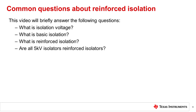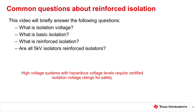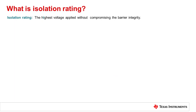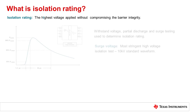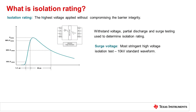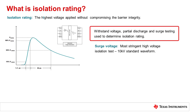Systems with voltages greater than 50 volts DC or 25 volts AC are considered to have hazardous voltages. For these systems, industry standards require isolation voltage certification for safety. Isolation voltage is the highest amount of voltage that can be applied across an isolation barrier without compromising its integrity. Across isolation technology types of optocouplers and digital isolators, the critical tests used to determine isolation voltage ratings are withstand voltage, partial discharge, and surge testing.